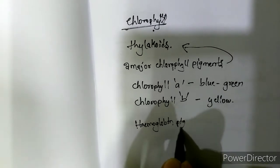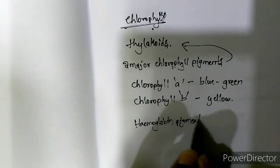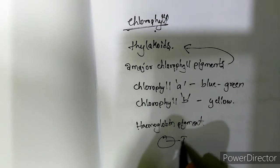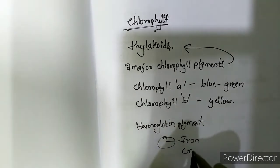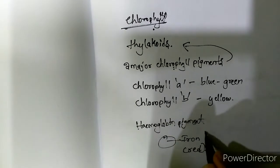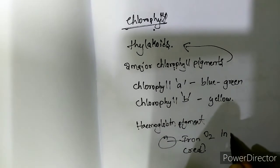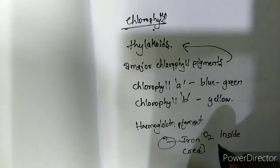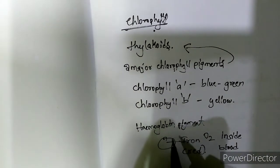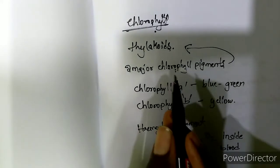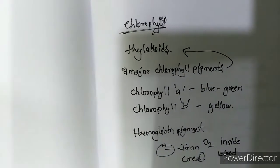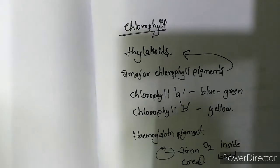Hemoglobin pigment is present in our blood. It is a red-colored pigment which consists of iron, and it helps in transportation of oxygen inside the blood. The structure of chlorophyll and hemoglobin pigment are similar to each other.